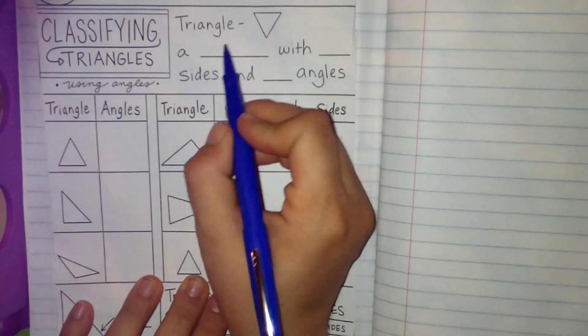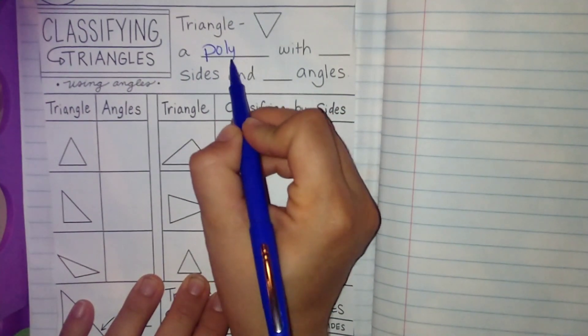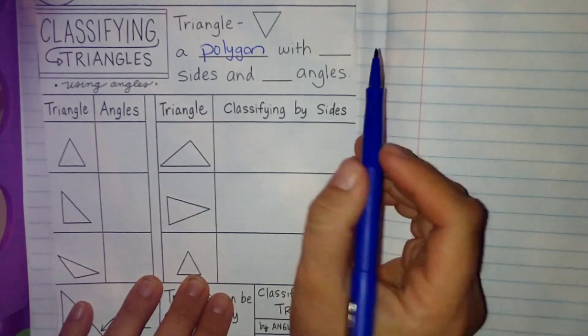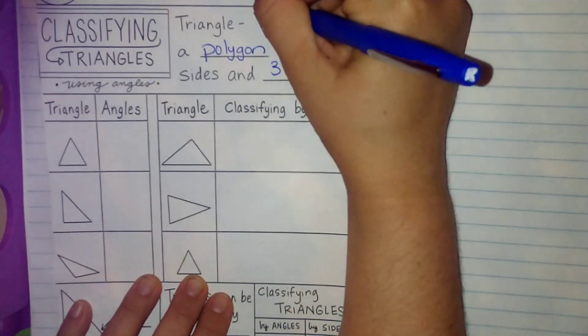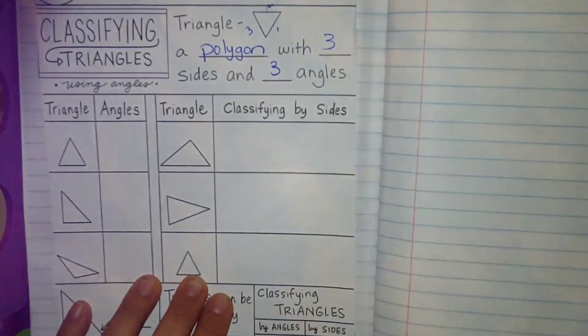At the very top, we're going to say a triangle is a polygon with three sides and three angles. One, two, three. One, two, three.